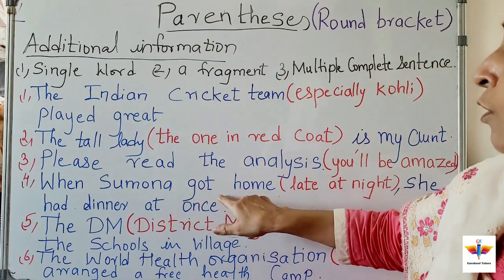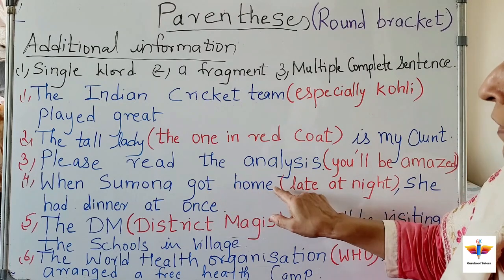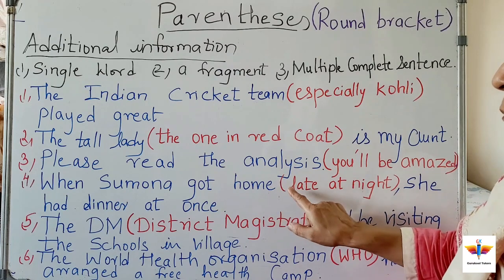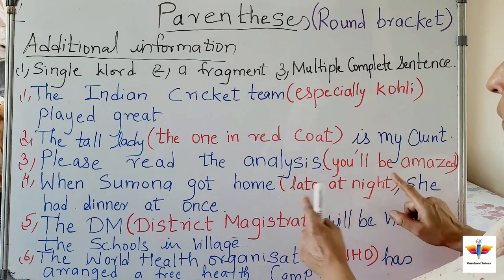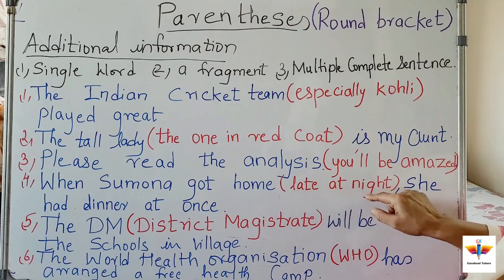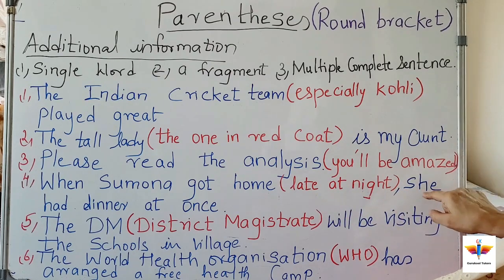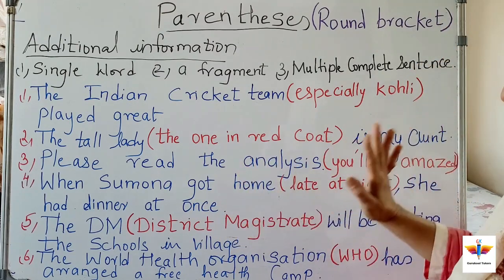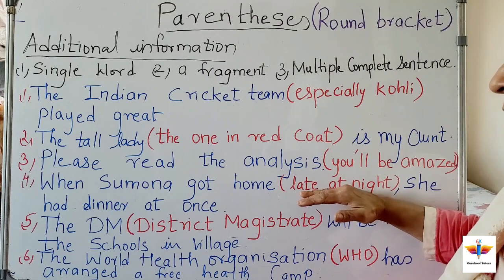'When Simona got home (late at night), she had dinner at once.' At 'got home' there is a small pause, so there is a comma. But where do you put the comma? After you complete the round bracket parenthesis — after 'late at night' — you put a comma. She got home late at night is the extra information. So after the parenthesis, you put a comma. It gives complete meaning, and the extra information is given in the bracket.